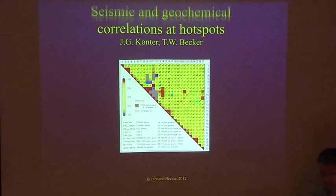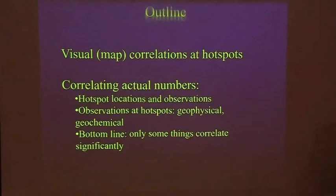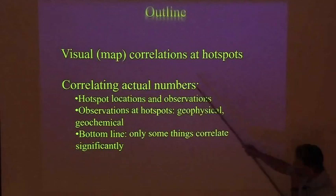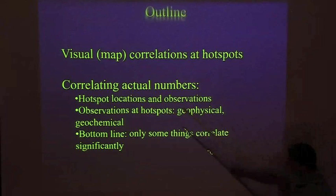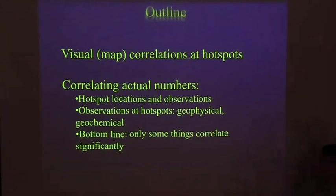I'll talk about the original approaches — map correlations where you plot it on a map and visually say that X correlates with Y. Then we'll go into what you can actually do in terms of correlating and actually getting a number, putting a number on those correlations to say whether that is actually a significant correlation or just looks like one but doesn't really work that way.